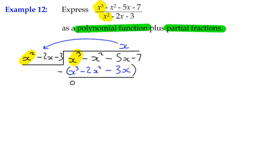Watch out here: we've got negative x squared minus negative 2x squared, which is the same as negative x squared plus 2x squared — it becomes an addition. Negative x squared plus 2x squared is x squared. The same happens with negative 5x: subtracting negative 3x becomes negative 5x plus 3x, giving negative 2x. Just remember that we're subtracting everything at the beginning of that expression.